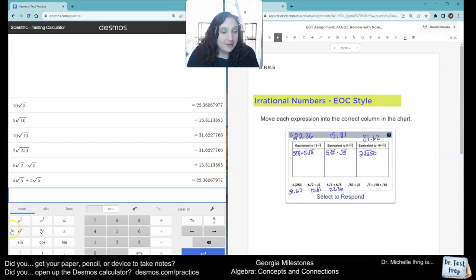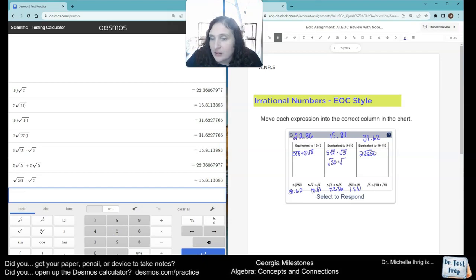Square root of 50 times the square root of 5. I'm going to click out. Okay, 15.811. And in a second I'm going to, I will show you one example of doing this the long way.